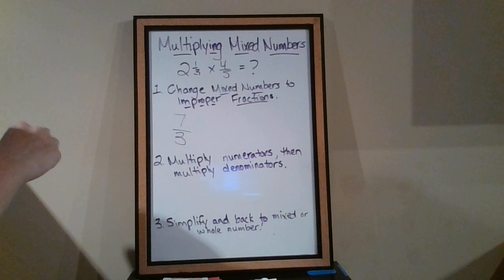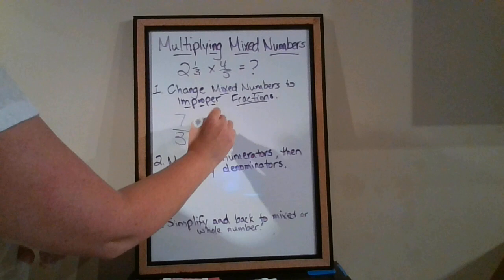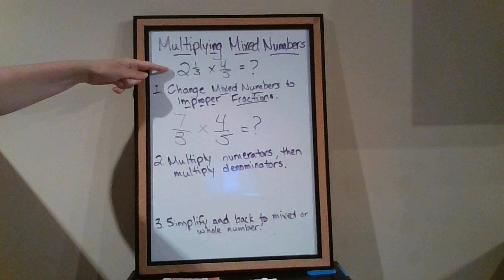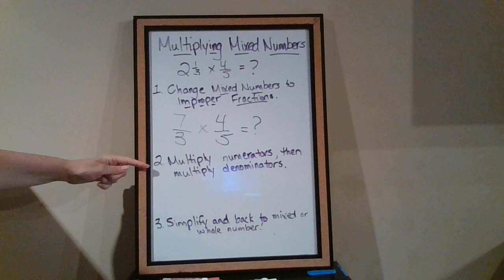Whatever we have, whether it's two and one-third left of a pizza, the pizza is still cut into thirds, so we can't change the size of that. And four over five is already a fraction, so it can stay like that. So that's step one. It's simply change the mixed number into an improper fraction. Remember that two and one-third is equal to seven over three, or seven-thirds.